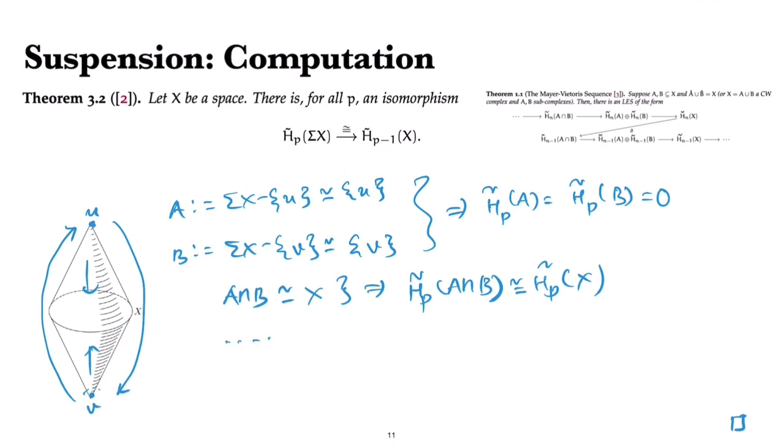So the long exact sequence that we get from Mayer-Vietoris looks as follows. This goes to zero, this goes to the pth homology of the suspension, which goes to the p-1st reduced homology of the space X, and that goes to zero. So this is the isomorphism we are looking for.